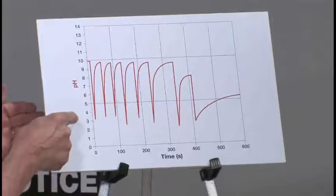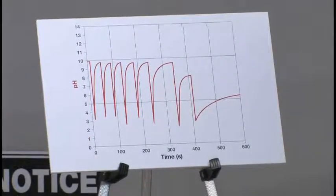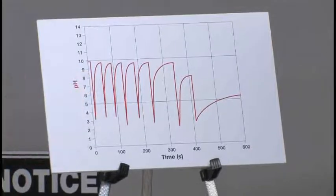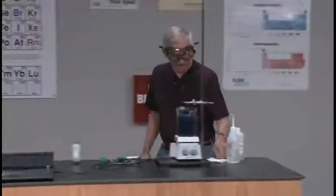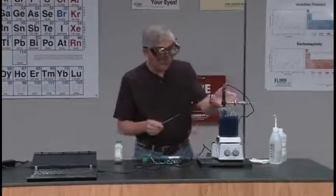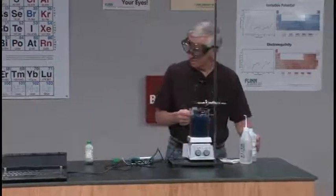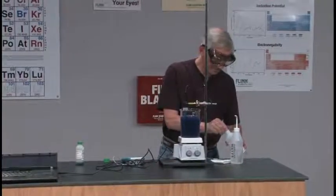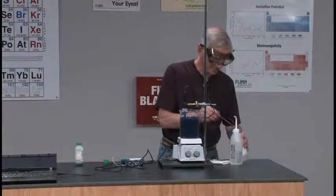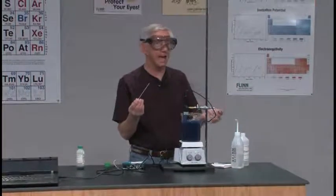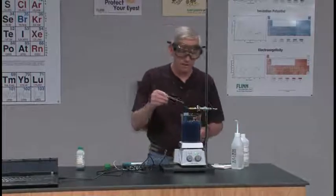Then, as the magnesium hydroxide dissolves, the pH comes back up and we work our way back to, again, an alkaline system. So, let's do it again. My thumb is calibrated, too. That's how I know I get exactly the same amount of hydrochloric acid every time.